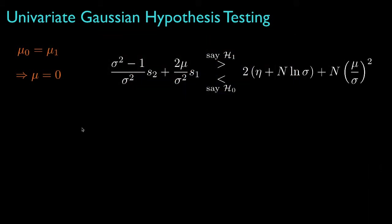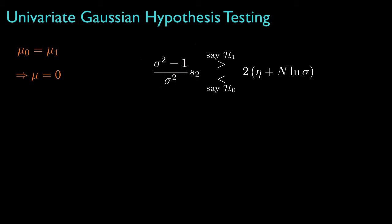In some other situations, the means for the hypotheses might be equal, so that the parameter mu would be equal to 0. In this case, the coefficient for the decision statistic S1 will be 0, as will one of the terms in the decision threshold, and this would result in a decision rule that only depends on the test statistic S2.